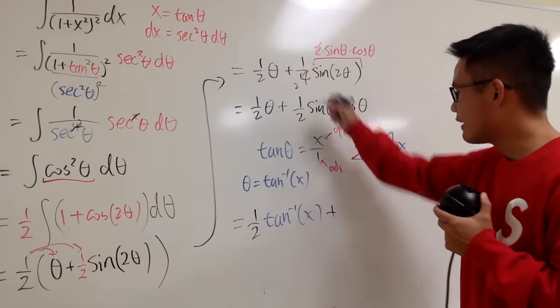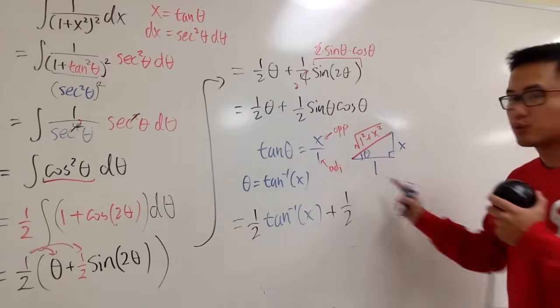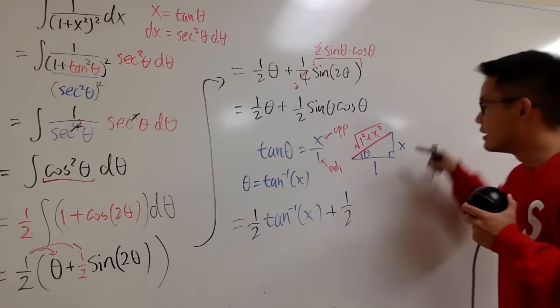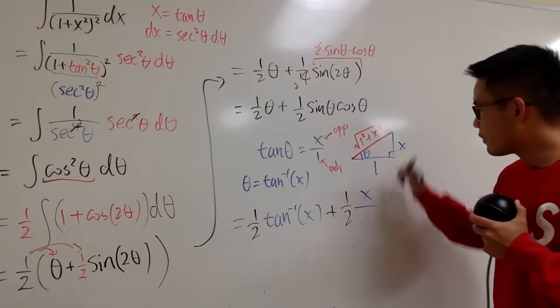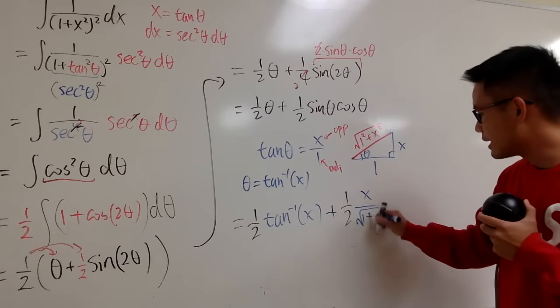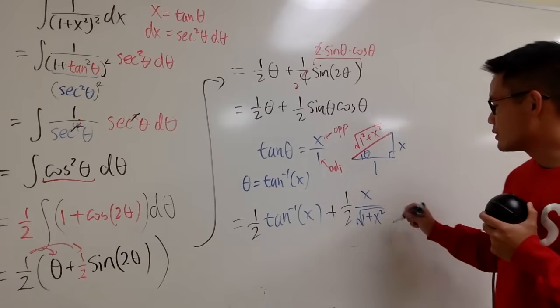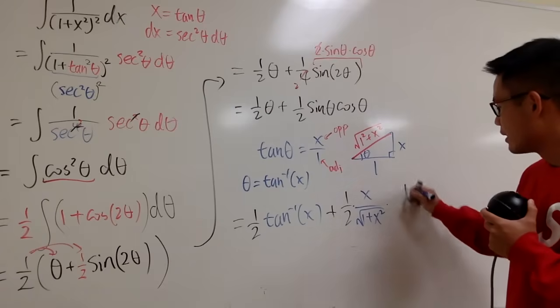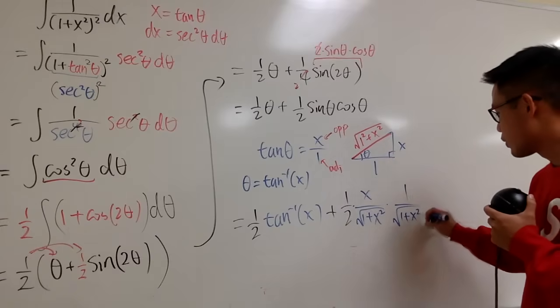Next, we put down plus, we have the 1 half. What's sine theta then? We have to look at this triangle here. Sine is the opposite over hypotenuse, so I will put this down as x over square root of 1 plus x squared. And what's cosine? Cosine is adjacent over hypotenuse, which is 1 over square root of 1 plus x squared.